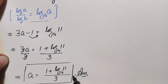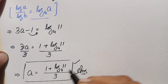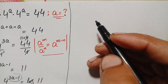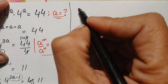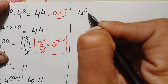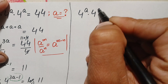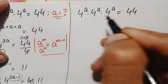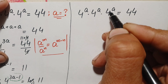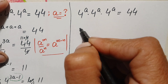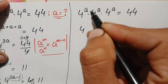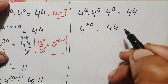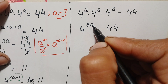Now we will verify this value of a. Rewriting the original problem: 4^a times 4^a times 4^a equals 44. Since the bases are the same, we add the powers — adding a three times gives 4^(3a) equals 44. Now we replace a with its value (1 + log₄(11)) / 3.